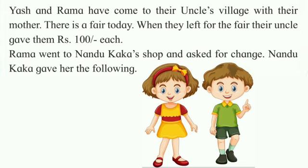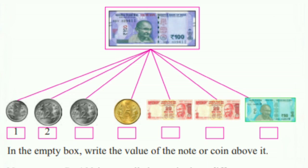Let us now see what is given in our textbook. Yash and Rama have come to their uncle's village with their mother. There is a fair today. When they left for the fair, their uncle gave them 100 rupees each. Rama went to Nandu Kaka's shop and asked for change. Nandu Kaka gave her the following change.